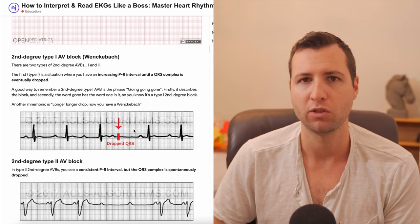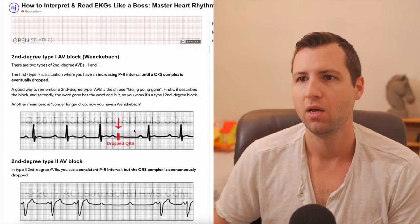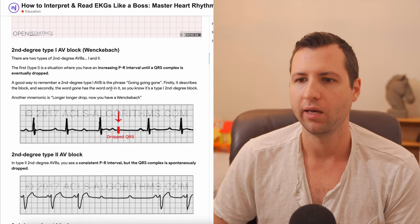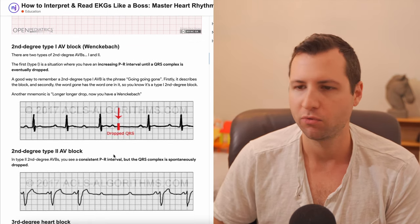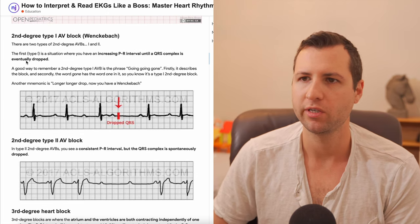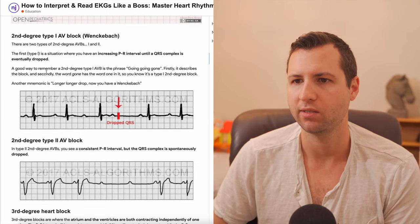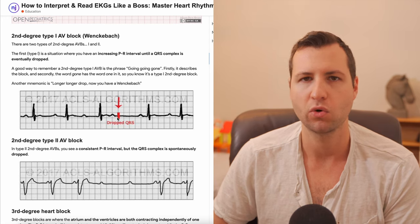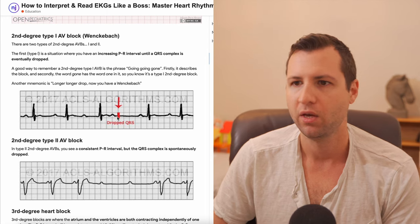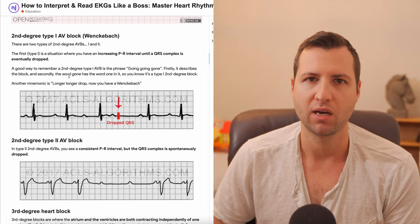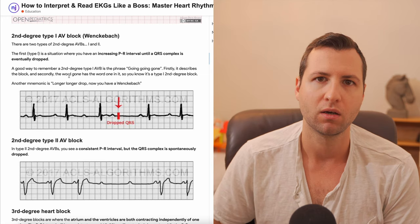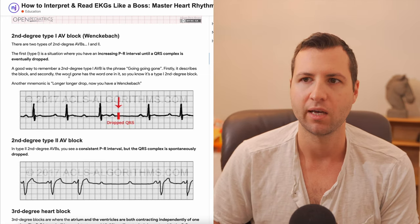Second degree blocks are broken down further into two different types: type one and type two. Type one is also called a Wenckebach block; type two doesn't really have a special name. For the second degree type one or Wenckebach block, your PR interval is going to get longer and longer until eventually it drops a QRS complex altogether. An easy mnemonic to remember this: 'longer, longer, drop — now you have a Wenckebach block,' or 'going, going, gone — that's a type one.'